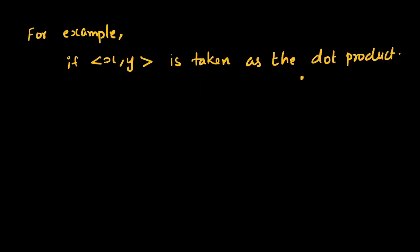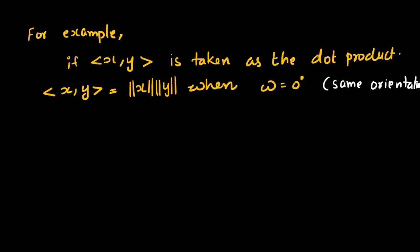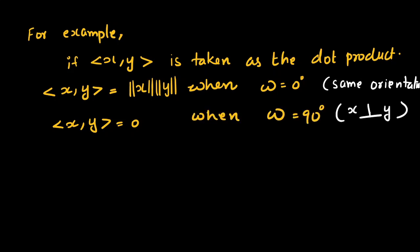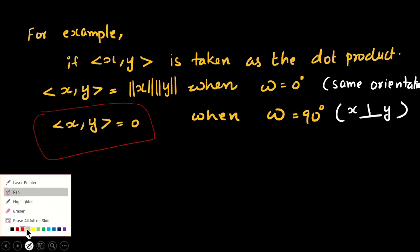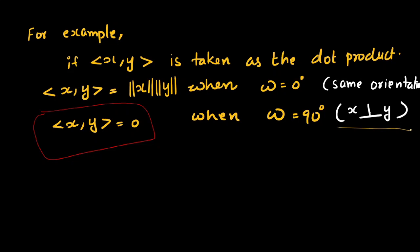For example, if we take the dot product as the inner product, then the inner product of x and y equals the norm of x times the norm of y when omega equals zero. And the inner product equals zero when omega equals 90 degrees — that is, when the vectors are perpendicular. When the inner product is equal to zero, we call the vectors perpendicular to each other, or orthogonal.